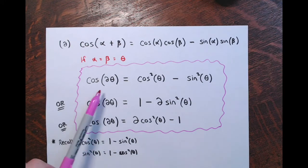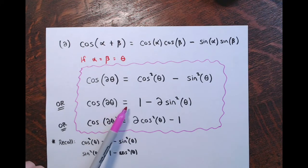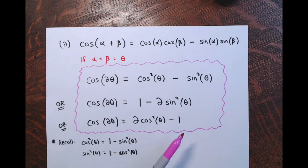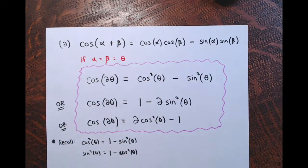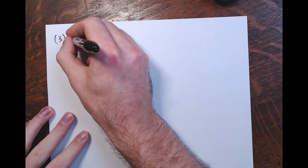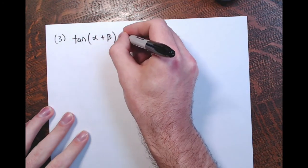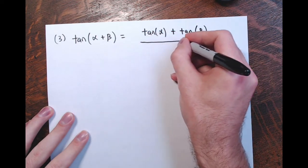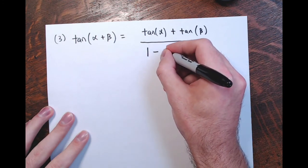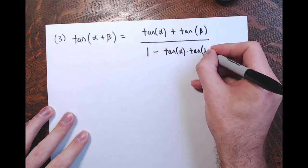All three are valid double angle formulas for the cosine of twice theta: cosine squared theta minus sine squared theta; one minus two sine squared theta; or two cosine squared theta minus one. All three give the same value. They all come from the sum formula — just having the two angles be the same. Now for tangent: remember the tangent of alpha plus beta is tangent alpha plus tangent beta, all divided by one minus tangent alpha times tangent beta.